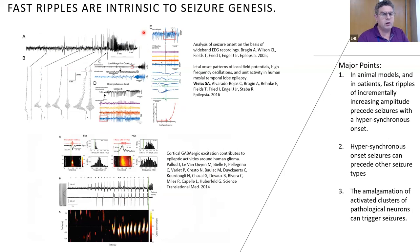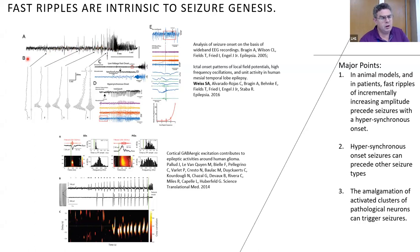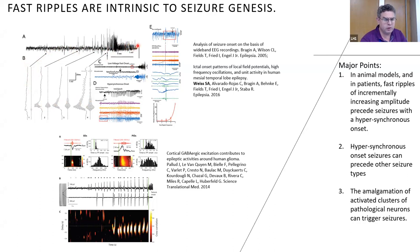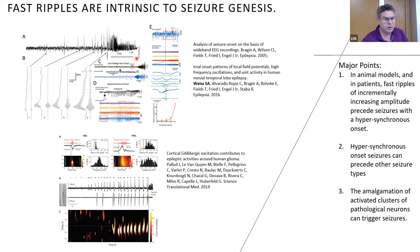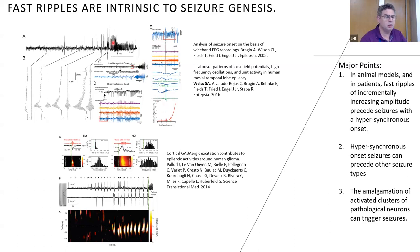Fast ripples are also intrinsic to seizure genesis. Panel A shows a seizure preceded by hypersynchronous epileptiform discharges. Panel B shows fast ripples superimposed on these discharges that incrementally grow in power up until seizure onset. These recordings are from rats treated with the chemoconvulsant kainic acid. Panel E from patients implanted with a Behnke-Fried micromacroelectrode also shows hypersynchronous spikes with superimposed fast ripples that incrementally grew in power prior to spontaneous seizure onset.